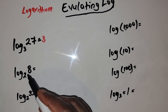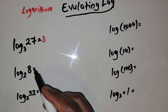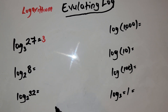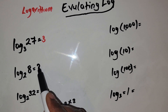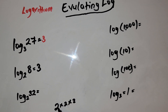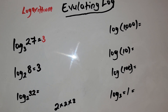Let's do the next problem. Ask yourself: how many times can you multiply 2 to give you 8? 2 times 2 gives you 4, and 4 times 2 is 8. So the answer is going to be 3, because 2 times 2 times 2 is equal to 8.